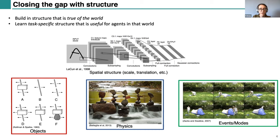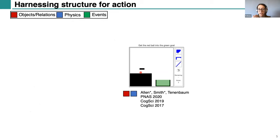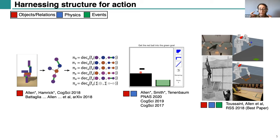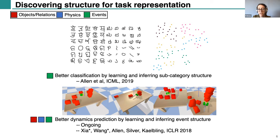In the first part of the talk I'll discuss how to harness objects, physics, and events to improve agents' abilities to act. The majority of the talk will focus on creative and rapid tool use in humans and how to replicate similar abilities in machines by harnessing object and physical knowledge. I'll also briefly cover a project that imbues more task-specific knowledge to a robot for tool use tasks involving long sequences of manipulations, and one showing how far you can generalize by incorporating object and relational structure into an agent's policy without specific physical knowledge.